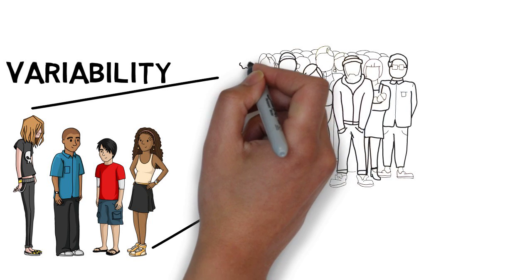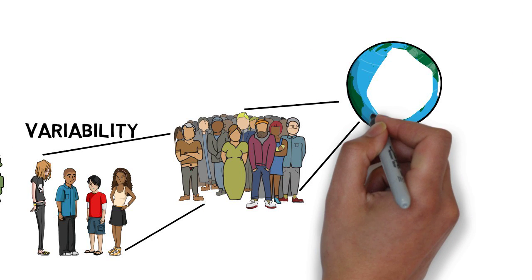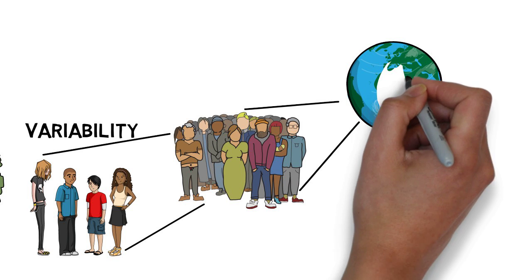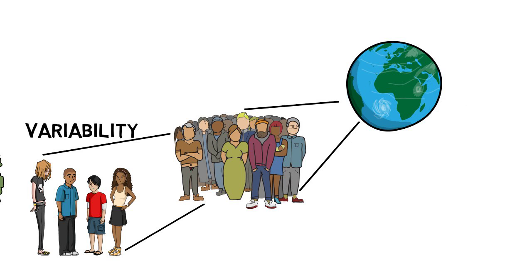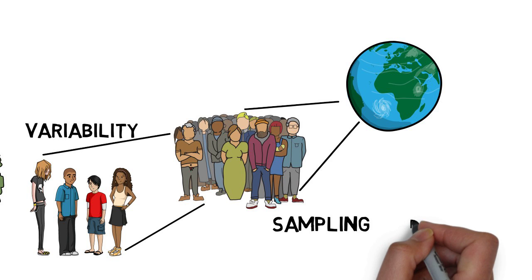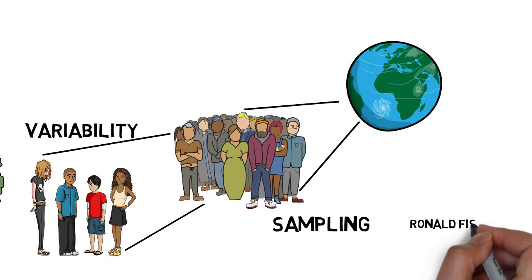This wouldn't be a problem if we could examine every single individual on the planet. But it turns out we can't, and that's the second problem. Instead, we have to take a sample, and that sample is pretty much certainly going to be different from the population in general. The larger sample we take, the better the approximation to the entire population we get, but effectively, we just have to assume that our sample is representative of that population, and we can never truly know.